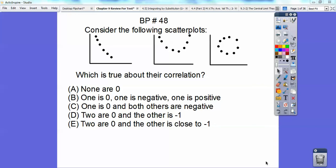None are 0. Well, are none 0? This looks like the correlation is 0 because 0 means it's not linear. This one is 0 also. So it's not A. It's not B because it says 1 is 0. These two are definitely 0 right here. It's not C either. D says 2 are 0 and the other is negative 1. Well, this is close to negative 1. If it was negative 1, it would be a perfectly straight line. So it's choice E on that one.